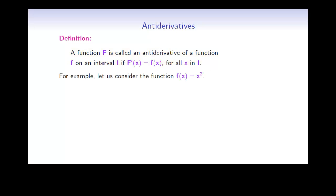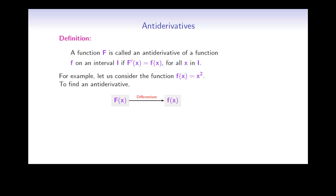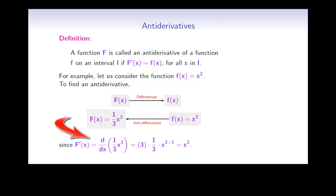As an example, let's look at the function f of x equals x squared, and let's try to find the anti-derivative of this function. If you knew capital F of x, you would need to differentiate to find small f of x. But now we are given small f of x, so we need to think of some function so that if you were to differentiate it, you would end up with x squared. For example, 1 over 3 x cubed would work, because if you differentiate it, you end up with x squared. Therefore, this is an anti-derivative.